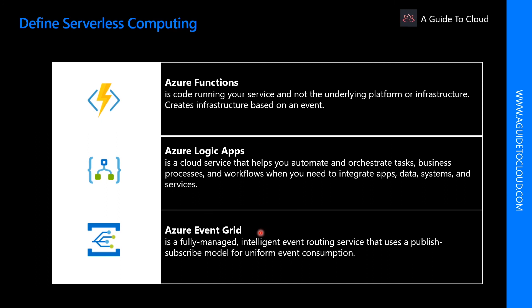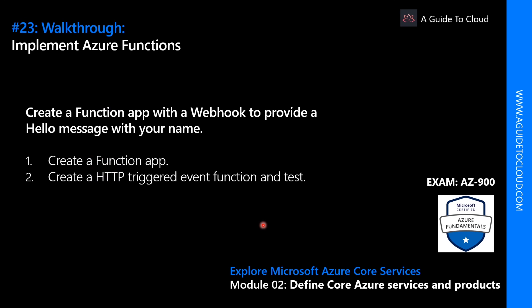Azure Event Grid allows you to easily build applications with event-based architectures. It's a fully managed intelligent event routing service that uses a publish-subscribe model for uniform event consumption. Event Grid has built-in support for events coming from Azure services such as storage blobs and resource groups. You can use Event Grid to support your own non-Azure-based events in near real time using custom topics, and use filters to route specific events to different endpoints, ensuring reliable delivery.